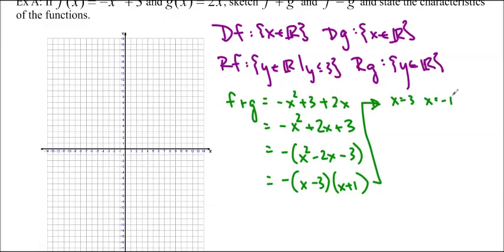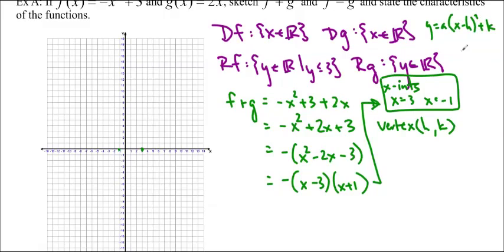The zeros are x equals 3 and x equals negative 1. So I'm just going to put those in here. Those are the x-intercepts, which is also a characteristic of the function that I am going to need. The vertex is going to be h,k for that form y equals a times x minus h squared plus k. We can find h by doing the sum of the zeros divided by 2, which ends up being 1. And to find the k, we're just going to plug it into f plus g. So it's f plus g of 1. So negative 1 squared plus 3 plus 2 times 1. That ends up being 4. So we have a vertex at 1, 4.